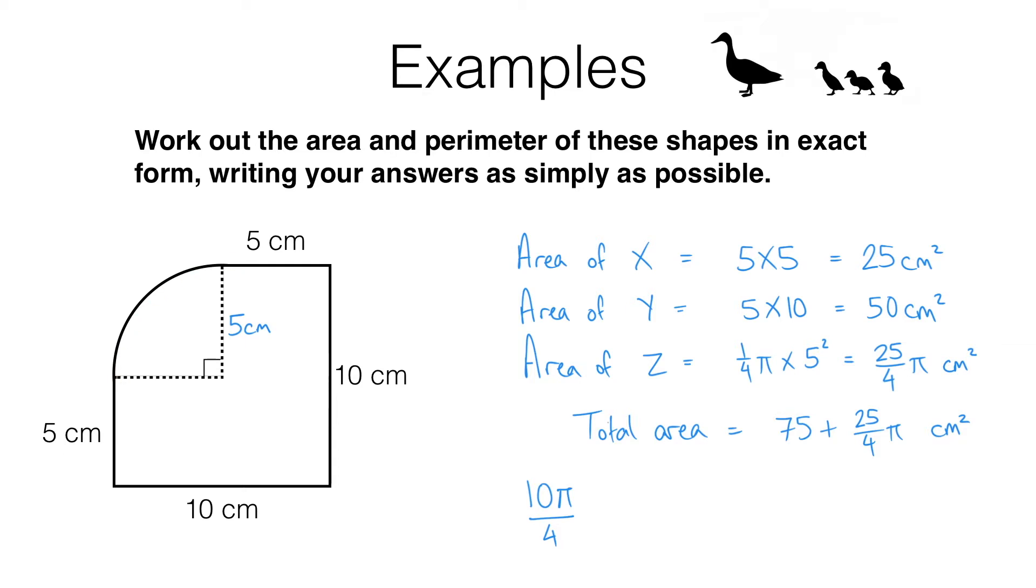And we then need to add on the 5, the 10, the 10, and the 5 to give us our perimeter.